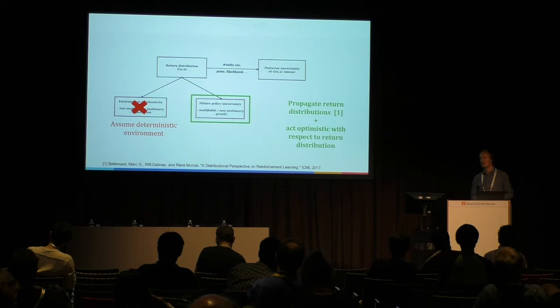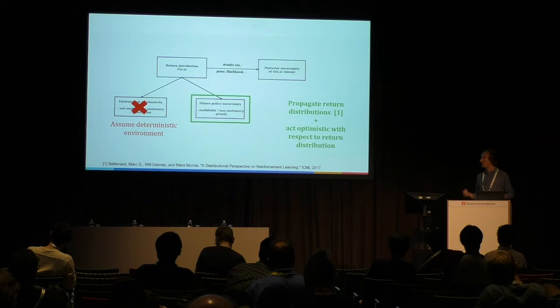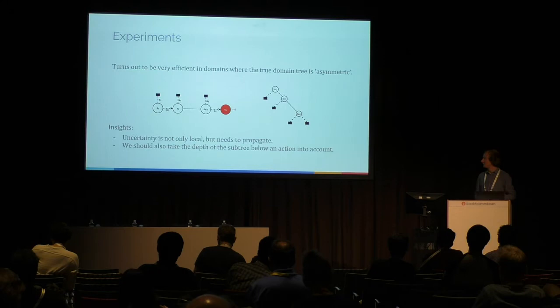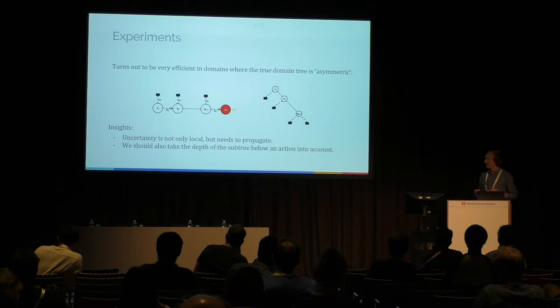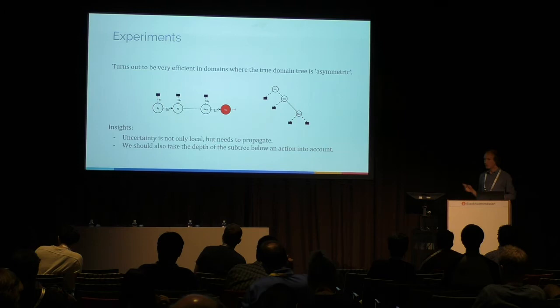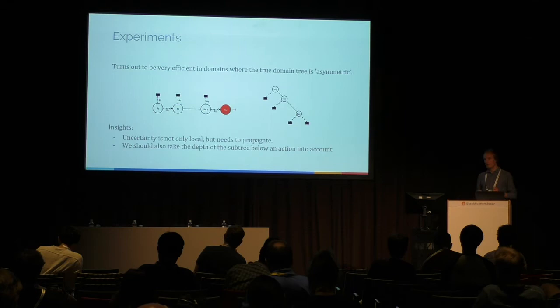We propagate return distributions in a fashion similar to work introduced at ICML last year, and act optimistically with respect to the distribution — aiming to achieve the best at the upper end. This turns out to be very effective, especially in domains where the underlying tree is asymmetric. A good example is the chain domain common in RL exploration research: if you unfold it as a tree, it extends much deeper in one direction. MCTS and local Bayesian methods perform poorly here because you need to propagate uncertainty. Depth below a certain action matters — a few counts followed by termination has a different interpretation than the same count at the root.